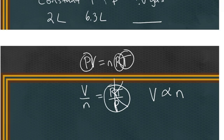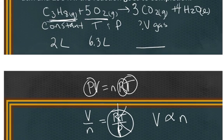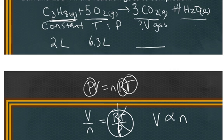So we can work directly in liters without converting to moles. We're starting with 2 liters of propane and 6.3 liters of oxygen, and we need to figure out how much carbon dioxide gas is formed. Because we have different amounts of the two reactants, we need to determine which is the limiting reagent using the balanced chemical equation and the volume-volume ratio.